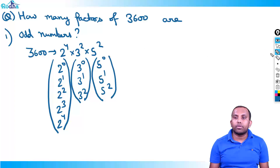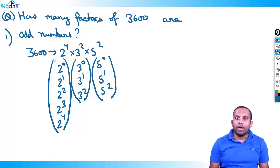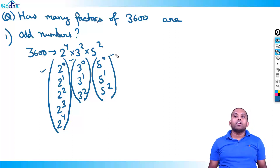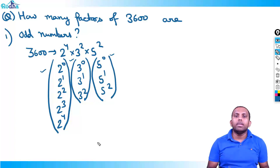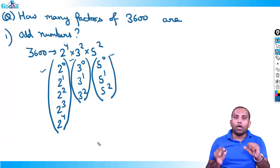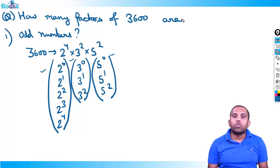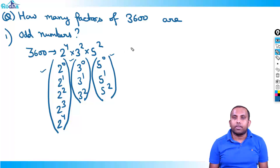We already wrote 3600 = 2⁴ × 3² × 5². We have these three brackets. I will explain Method 1 first for conceptual clarity, then Method 2 for the direct approach. For odd numbers, we cannot pick any term that contains a power of 2, since any multiple of 2 is even.